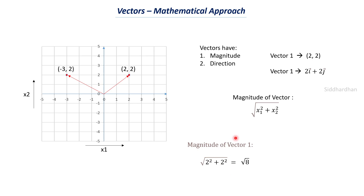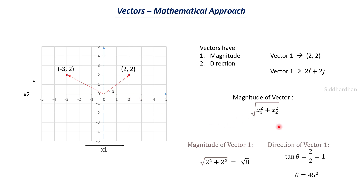Vectors also have a direction. Drawing a perpendicular from the vector's endpoint to the horizontal axis forms a right triangle. Using tan θ = opposite / adjacent, for the vector (2, 2) both sides are 2 units, so tan θ = 2/2 = 1, and tan⁻¹(1) = 45°. This vector is therefore aligned at 45 degrees. This is how you find both the magnitude and direction of a vector in mathematics.